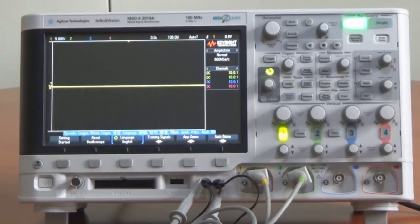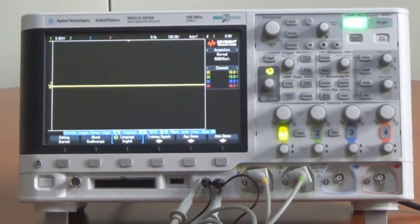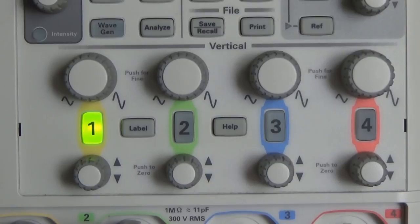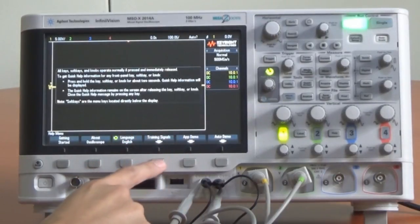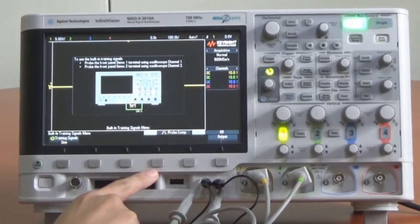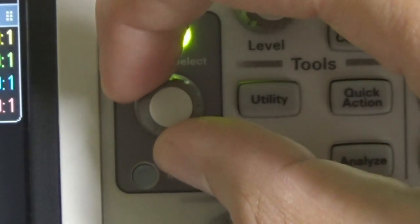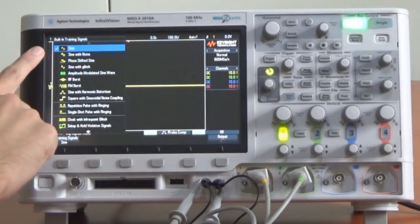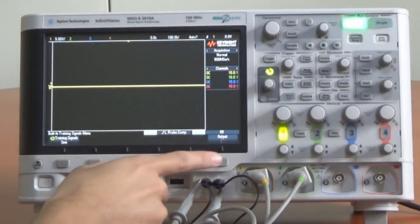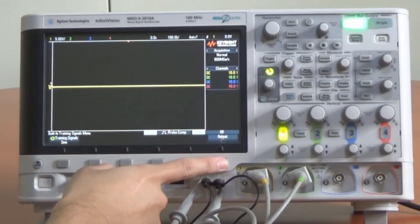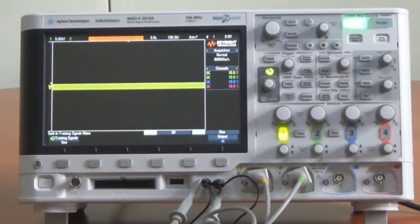Presionamos la tecla Help del panel frontal que está cerca de los controles verticales del canal 2. Luego presionamos la tecla programable Training Signals debajo de la pantalla del osciloscopio. Con la perilla Entry seleccione la señal Sine, la cual se encuentra en la parte superior de la lista. Luego presione la tecla programable Output para encenderla. A continuación debería encontrar una onda sinusoidal en el terminal Demo 1, pero todavía no se le reconoce con los factores de escala predeterminados del osciloscopio.